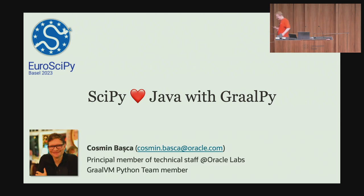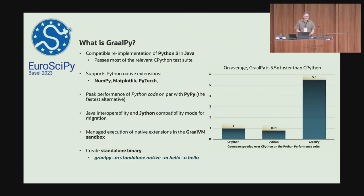Cosmin Basca, please. Hi, I'm Cosmin. I work for Oracle Labs here in Switzerland, and I work on GraalVM — specifically on GraalPy. GraalVM is essentially a Java virtual machine, a drop-in replacement for standard Java. GraalPy is a Java implementation of Python running on top of GraalVM. It bridges both ecosystems — Java and Python — so if you want to do number crunching in NumPy or SciPy, fetch data using JDBC drivers from Java, or display results in Java's cross-platform UI, you can do that with GraalPy.